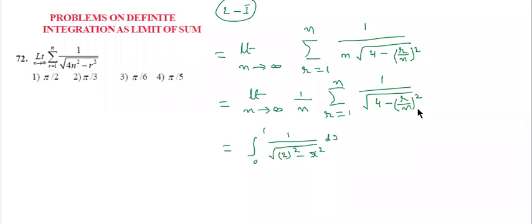This is in the form of integration 1 by under root a square minus x square dx. What is the formula students? That is sine inverse of x by a. A means 2. And what is the limit? 0 to 1.